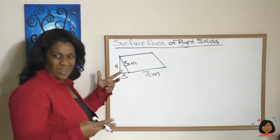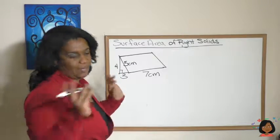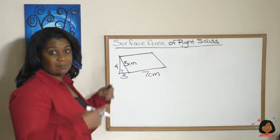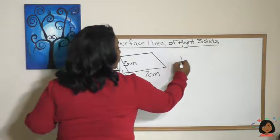Okay, so we've got five sides here to figure out. But only one, the triangle, is duplicated. So let's do the triangle first. Area of a triangle, one half base times height. So let's do one half.